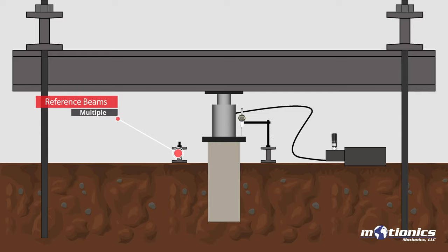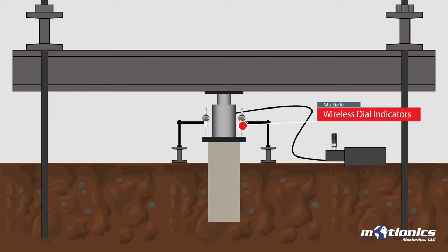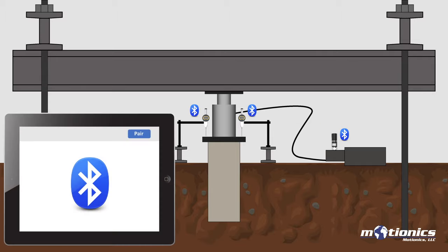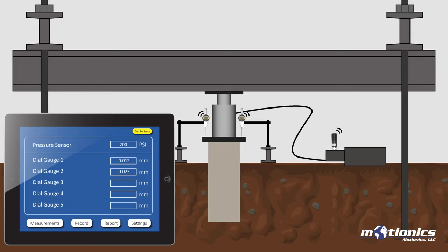Multiple wireless dial indicators are used to measure movement of the testing pile. Align and mount the indicators parallel to the pile. Turn on all the measurement devices and connect them in the Motionix wireless pile load test software on iPad via Bluetooth.